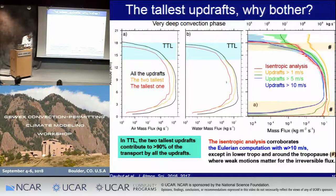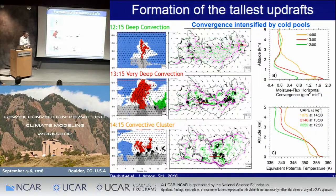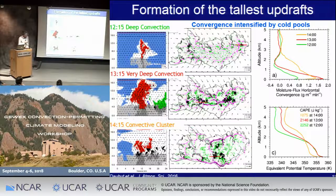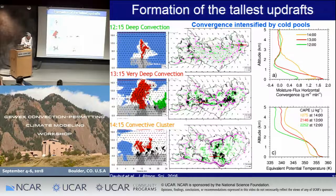It's also interesting to look at individual convective cells to understand why the tallest updrafts have very large latent heat release due to ice formation. All these updrafts develop over convergence lines, shown in purple — the tallest updrafts for each of the three phases: deep convection, very deep convection, and convective clusters all develop over convergence lines. For the very deep convection phase, the convergence is highest, and this is also when the CAPE is almost highest, with more than 2,000 joules per kilogram.